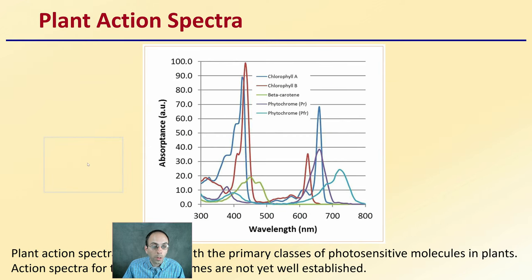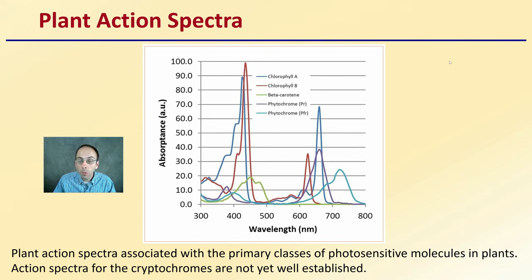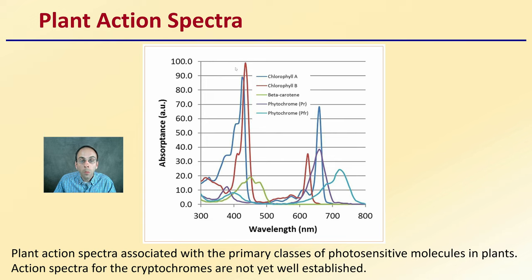Now, plant action spectrum — the plant action spectra associated with the primary classes of photosensitive molecules in plants. The action spectrum for the cryptochromes is not yet well established. We have chlorophyll A and chlorophyll B, which most people are probably familiar with. We can see a very strong absorbance down in the bluish wavelengths, and then another peak closer to the orange or red areas, measured in wavelengths which we'll see in future slides.